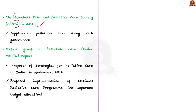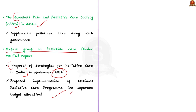At the national level, palliative care is trying to catch up. The Ministry of Health and Family Welfare constituted an expert group on palliative care, which submitted its report called 'Proposals of Strategies for Palliative Care in India' in November 2012. On the basis of this report, a separate budget is allocated for the implementation of the national palliative care program. However, palliative care in India is still at an early stage of development and faces numerous problems — it needs to be adopted better in Indian health care policy.